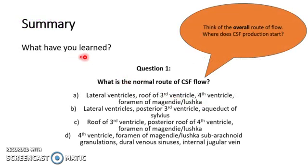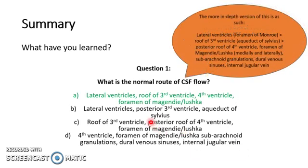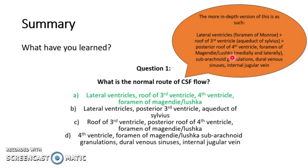Question 1: What is the normal route of CSF flow? Think of the overall route of flow, where the production starts and where it ultimately ends up. The answer is A. CSF is produced in the choroid plexus, which is located in the lateral ventricles. It then passes through the foramen of Monroe to the roof of the third ventricle, where it goes through the aqueduct of Silvius to the posterior roof of the fourth ventricle, and then through the foramen of Magendie or Luschka — medially and laterally respectively — through the subarachnoid granulations, cerebrovenous sinuses, and is finally drained in the internal jugular vein. Think: Magendie — medial; Luschka — lateral.